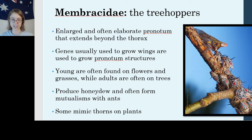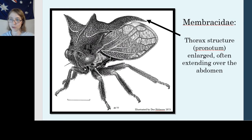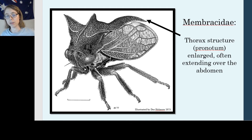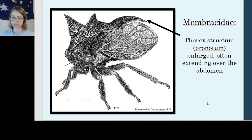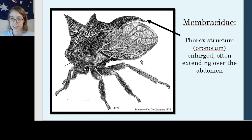Let's take a look at that pronotum. The pronotum, which is a plate on the back of the insect's thorax — their middle part — is enlarged. In this illustration you can see the pronotum extends well past the length of the abdomen of this insect. Like other Auchenorrhynchans, we have short bristle-like antennae and uniform wings that don't have a leathery portion in front.